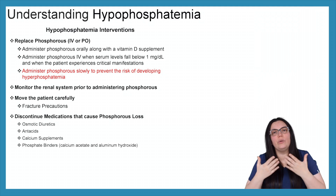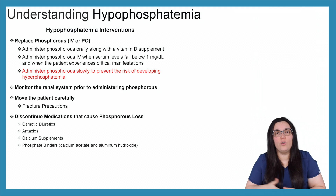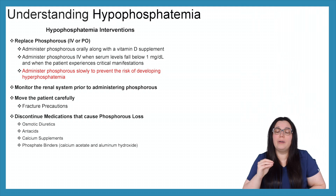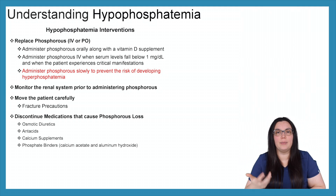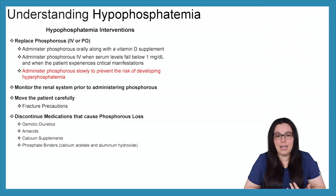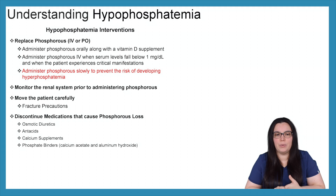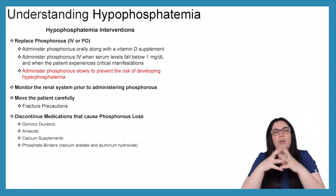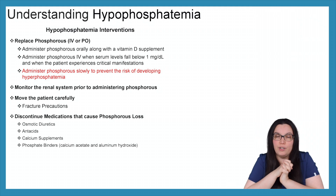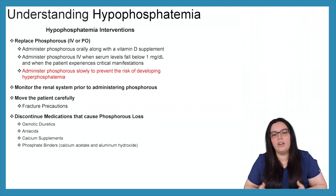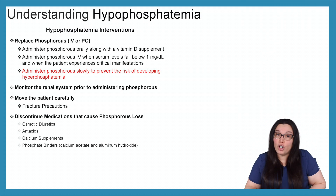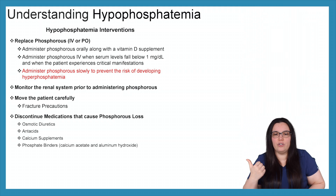How are we going to intervene to help these patients? Our main goal is to replace the phosphorus we lost, either by IV or PO. When administering phosphorus orally, we want to give it along with vitamin D supplementation to help with absorption. If we're administering phosphorus IV — when serum levels fall below 1 milligram per deciliter and the patient is experiencing critical manifestations — we want to make sure we're giving it very slowly, just like with any electrolyte, to prevent the risk of developing hyperphosphatemia.